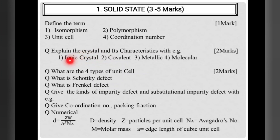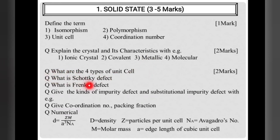For two-mark questions, explain the crystal types and their characteristics with examples: ionic crystal, covalent crystal, metallic crystal, or molecular crystal. Also important: explain the four types of unit cell for two marks. Regarding defects, Schottky defect and Frenkel defect are important, along with interstitial impurity and substitutional impurity defect with examples.